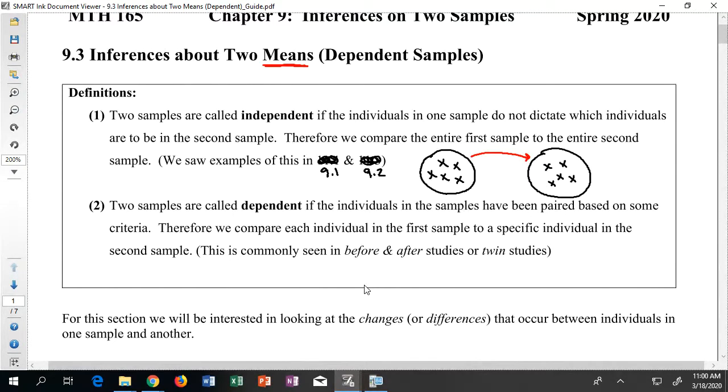But when I talk about dependent samples, that occurs when individuals in the samples have been paired up based on some criteria. We're ultimately interested in taking individuals in one sample and linking them to individuals in another sample.